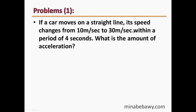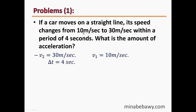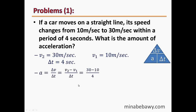Problem 1: A car moves on a straight line and its speed changes from 10 m/s to 30 m/s within a period of 4 seconds. What is the acceleration? Given: V1 equals 10 m/s, V2 equals 30 m/s, delta-t equals 4 seconds. Acceleration equals V2 minus V1 over delta-t equals 30 minus 10 over 4 equals 5 m/s squared. The type is positive acceleration or accelerating motion.